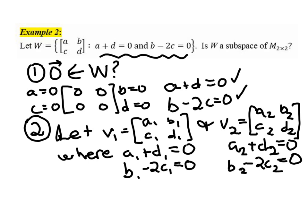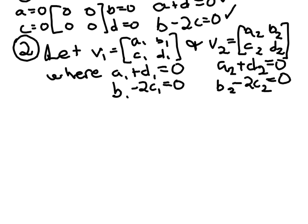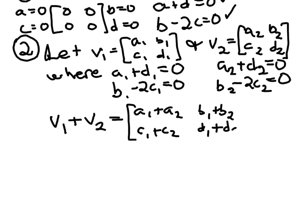The question now is, is this thing closed under addition? So if I take the sum of these two just general vectors in W, would their sum also belong in W? So V1 plus V2 would be just add the corresponding entries. So we'd have A1 plus A2 in this position, B1 plus B2 here, and so on.